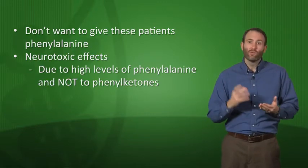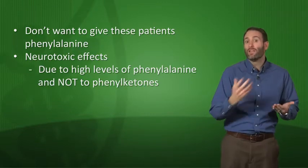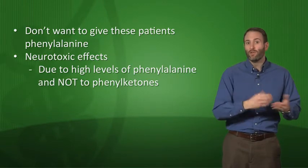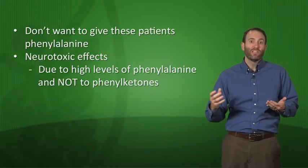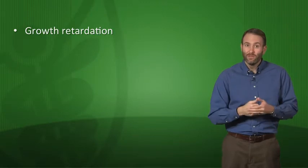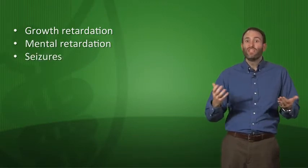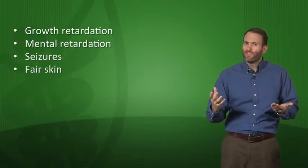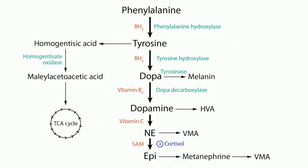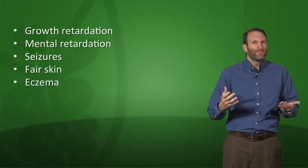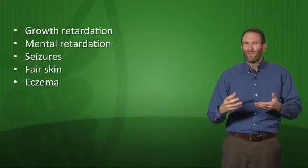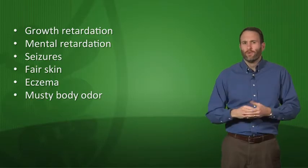With PKU, phenylketones build up when you intake a lot of phenylalanine, but the neurotoxic effects are actually related to the high levels of phenylalanine itself, not the phenylketones. This can cause growth retardation, mental retardation, seizures, and fair skin — because you can't go through the biosynthetic pathway to make melanin. You'll also see eczema and a characteristic musty body odor.